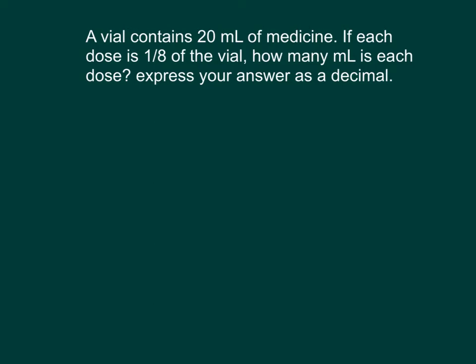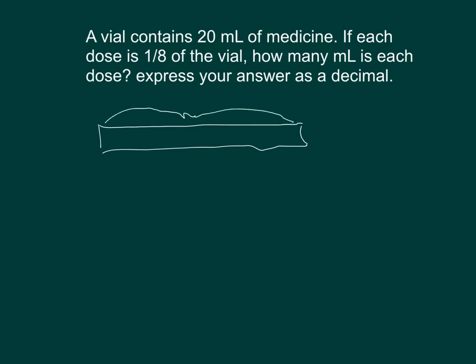Let's start by drawing a tape diagram. This is the amount of medicine that is in the vial — 20 milliliters. And we're looking at one-eighth of 20 milliliters, where each dose is equal to a certain amount.